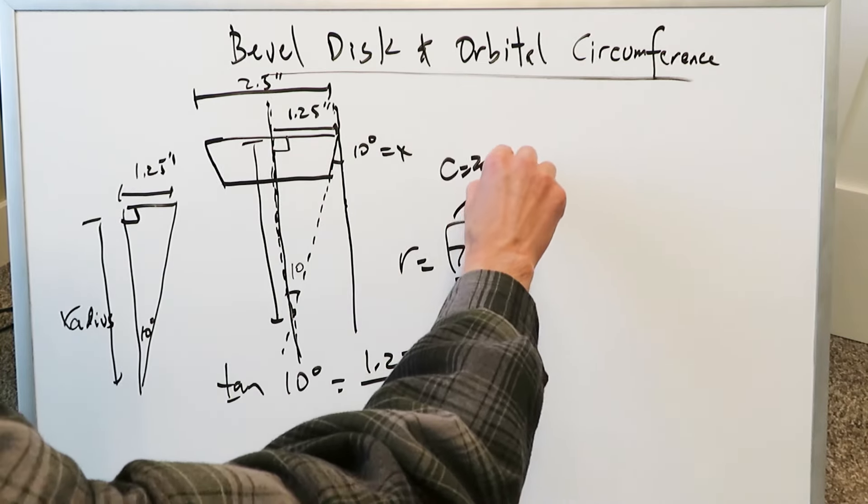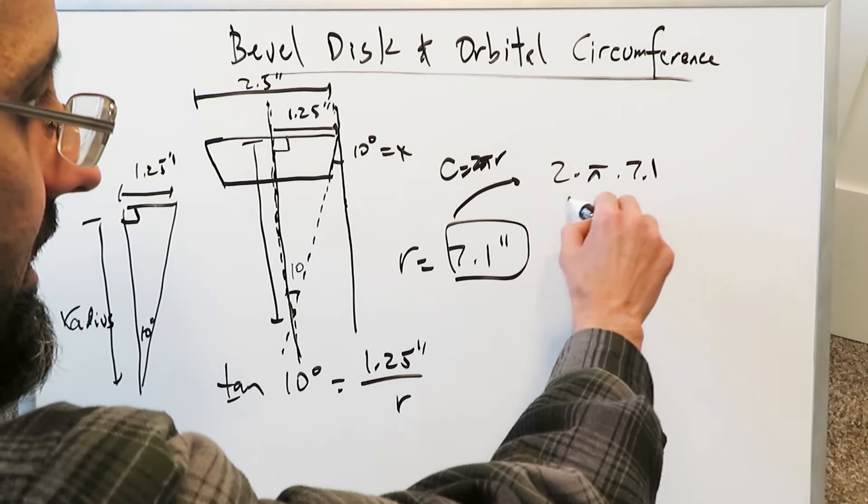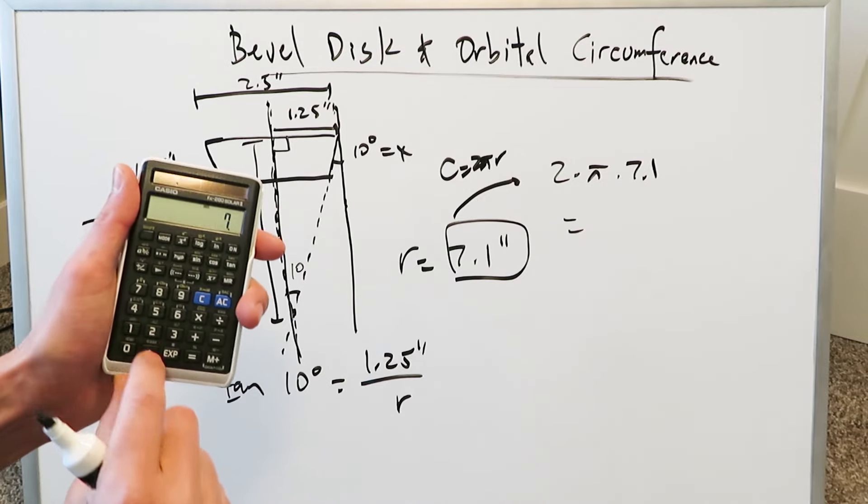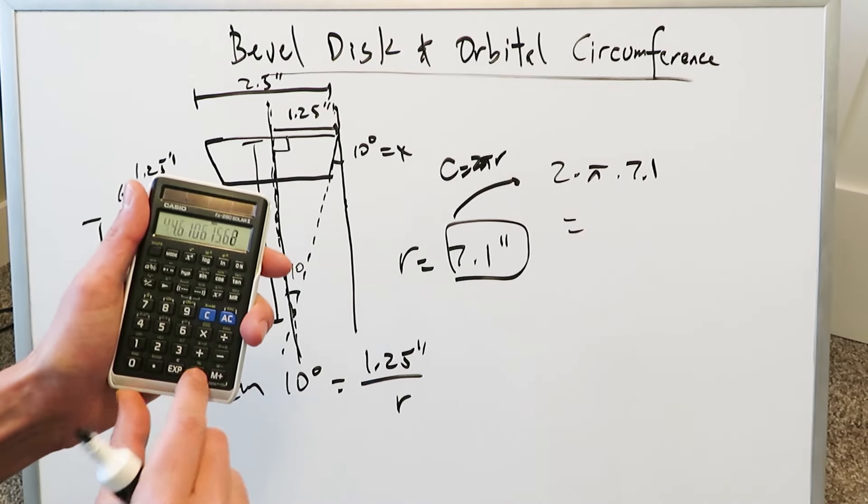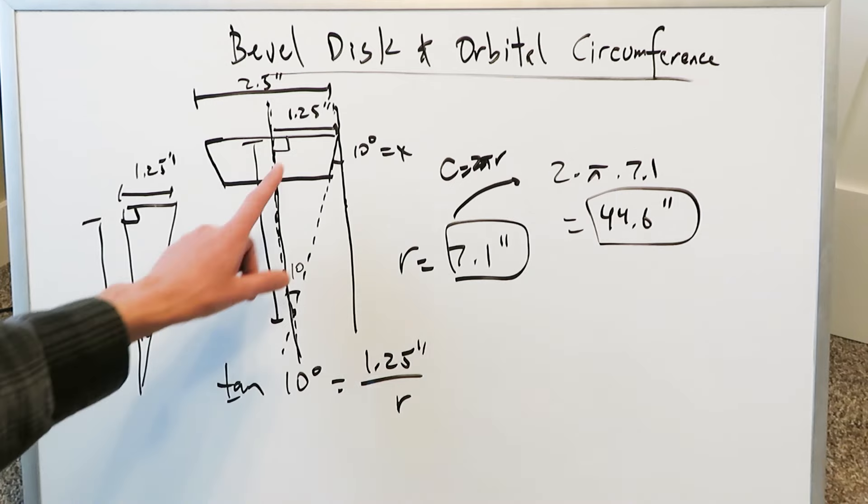From here you can do C equals 2 pi r. You do 2 times pi times 7.1. And that will give you exactly the circumference of the orbital path. I'll do 7.1 times pi times 2. And I've gotten 44.6 inches.